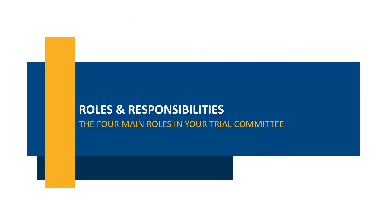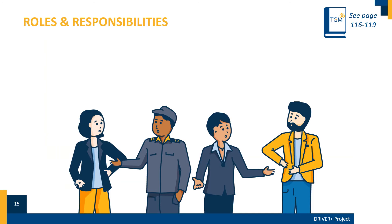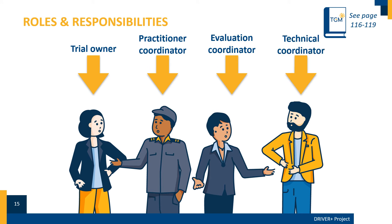Now we present the roles and responsibilities of the four main roles in your trial committee. When iterating through the TGM steps, you need several experts, so you form a team with your colleagues and potentially even external experts. A committee consists of the following roles: trial owner, practitioner coordinator, evaluation coordinator, and technical coordinator. Note: if you are a small team, a single expert can take over multiple roles at once.